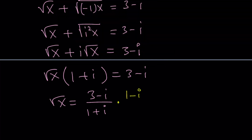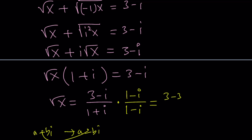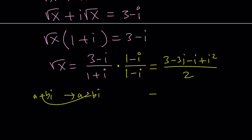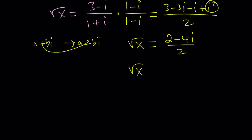The complex conjugate of a + bi is a − bi, so that their product and sum are both real numbers. When you distribute the numerator, you get 3 minus 3i minus i plus i squared. The denominator is 1 squared plus 1 squared from difference of squares — with complex numbers it's like a sum of two squares — that gives us 2. Simplifying the numerator: i squared is negative 1, so 3 minus 1 is 2, giving us 2 minus 4i divided by 2. This is square root of x, not x yet.